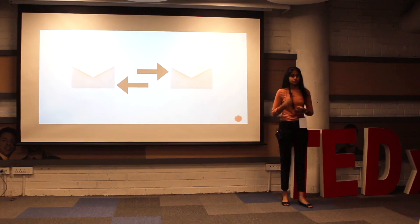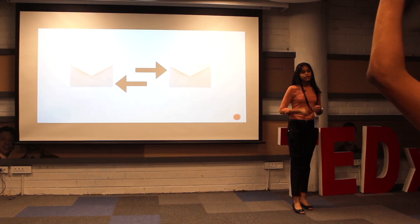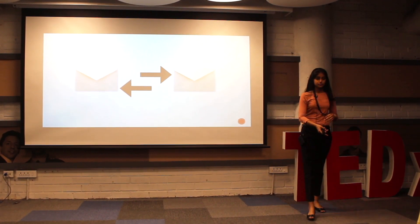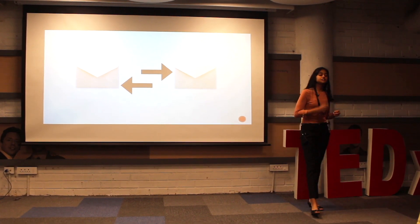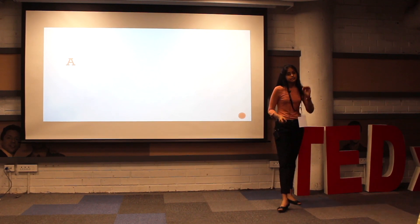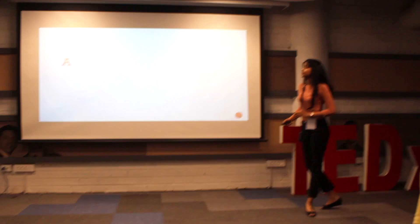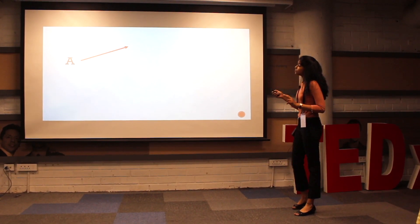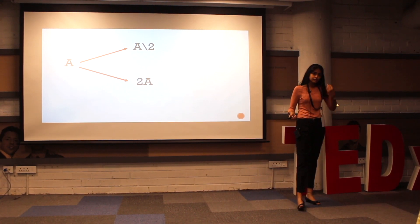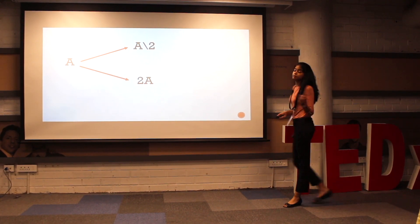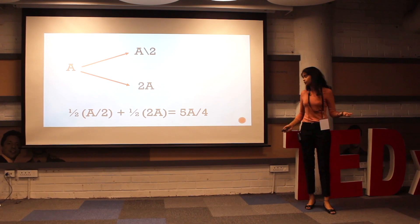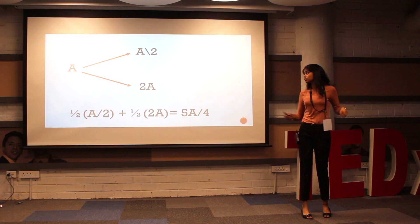Would you switch or would you not? When we think about it at first glance, switching the envelope seems quite pointless. However, when we look at this situation again, we could possibly gain twice as much money while risking to only lose half of what we have. Let's try the mathematical approach. Let A be the amount of money in the first selected envelope. There are two possibilities with equal probability: either there is an A/2 amount in the other envelope, meaning we have the larger sum, or there is a 2A amount in the other envelope, meaning we have the lesser amount. If we calculate the expected amount of money in the other envelope, the equation gives us that the expected value is 5/4 A, which is quite obviously greater than A — so we are prompted to switch the envelope.